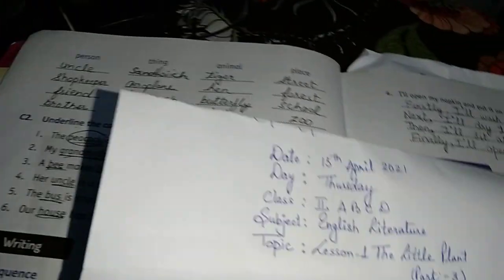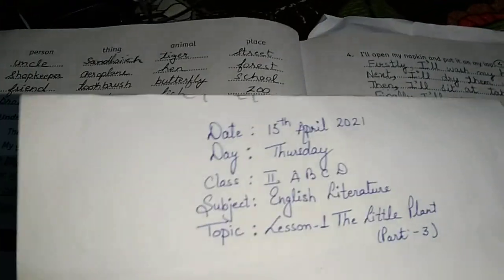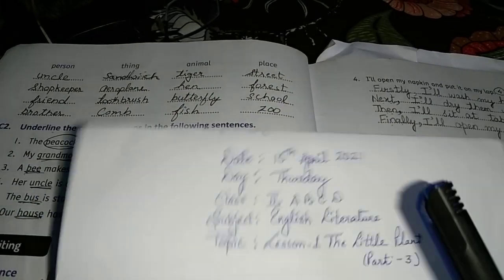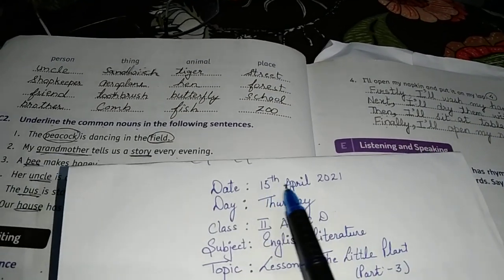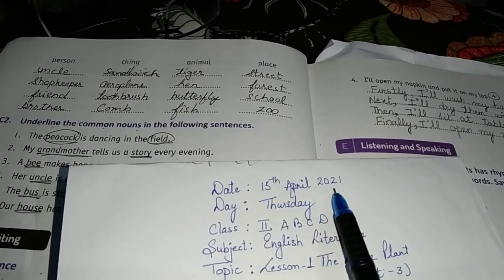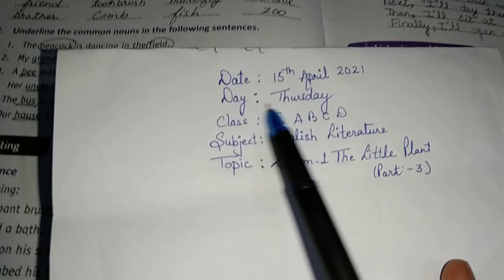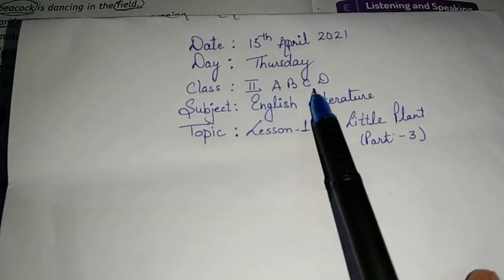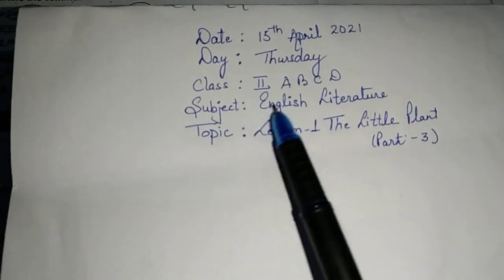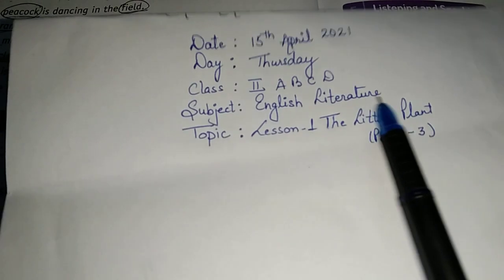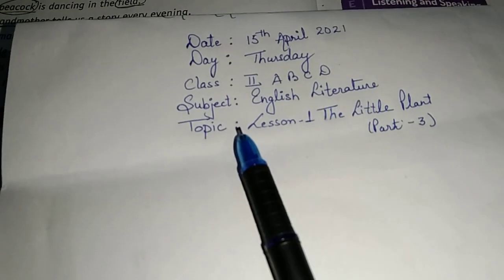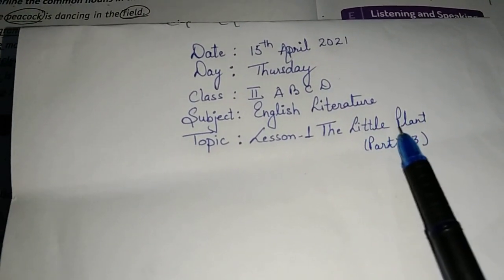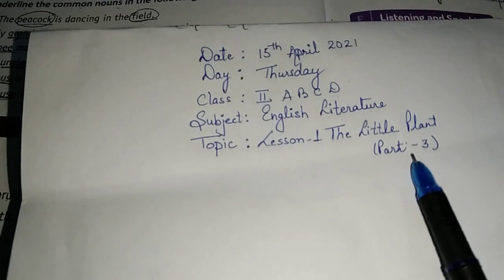Hello dear children, welcome again. Let's start today's lesson. Today's date is 15th of April 2021, day is Thursday, class is Second A B C D, subject is English Literature, topic is Lesson Number One: The Little Plant.